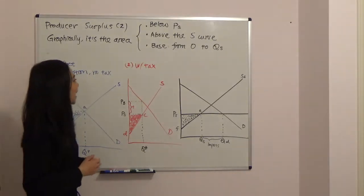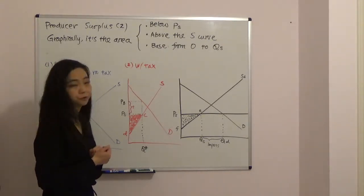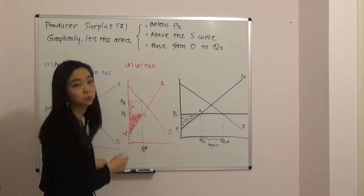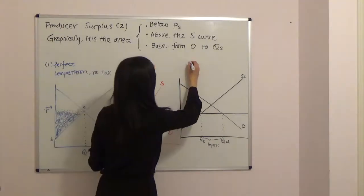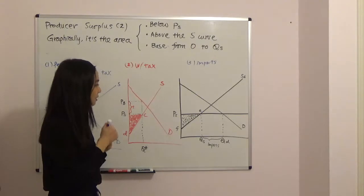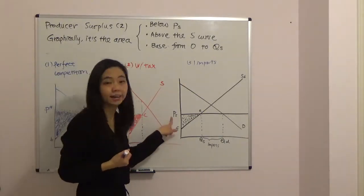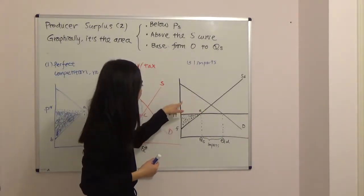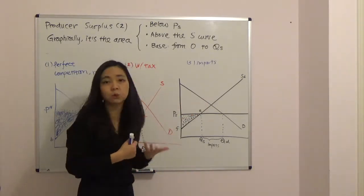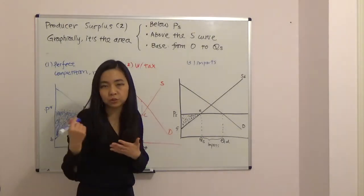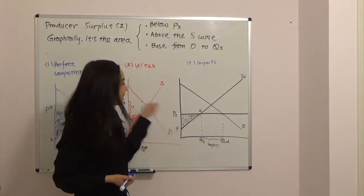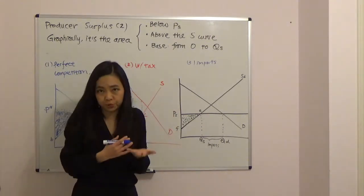That's the case of perfect competition with tax. Now we move on to the third case: international trade with imports. Suppose the international price is PI. You can see the international price is lower than the local price, and therefore there will be imports. Since we're a small country relative to the rest of the world, we are a price taker and we take PI as given.